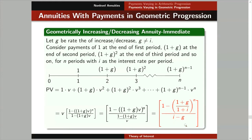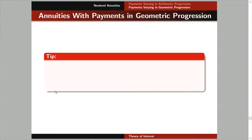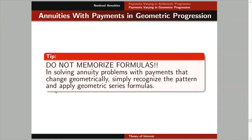This is the present value of this annuity immediate. We don't have an actuarial symbol for a geometrically increasing or decreasing annuity immediate, so we simply use PV. My tip: for annuities with payments in arithmetic progression I suggested memorizing the PQ formula, but here I highly recommend you do NOT memorize formulas. Instead, recognize the pattern and apply geometric series formulas.